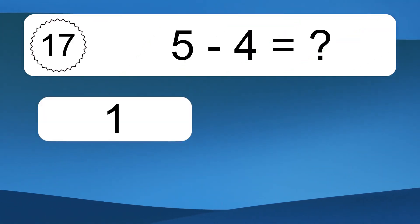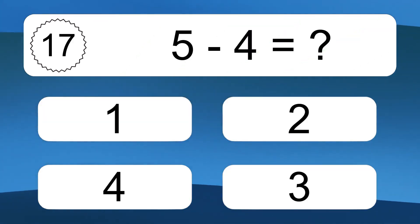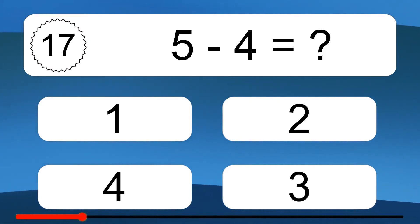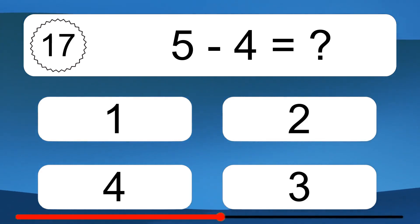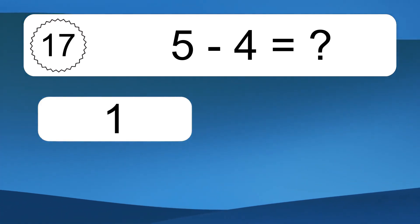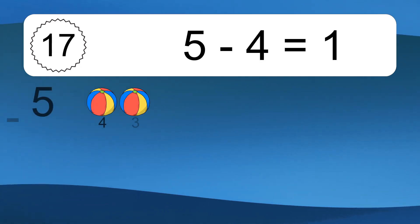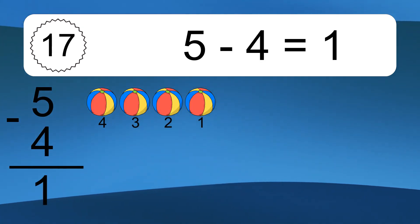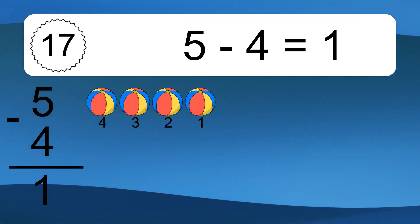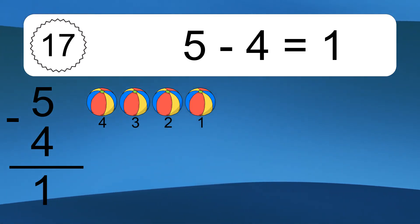5 minus 4 equals what? 5 minus 4 equals 1. Let's count it: 4, 3, 2, 1.